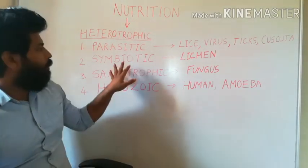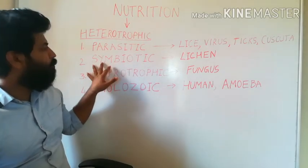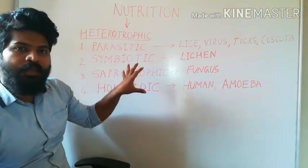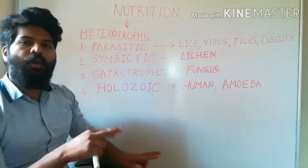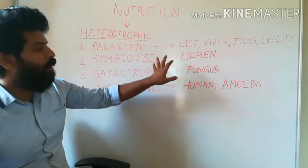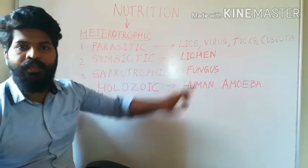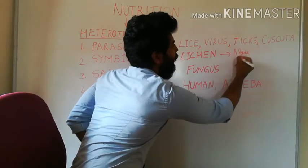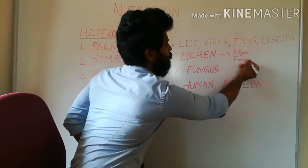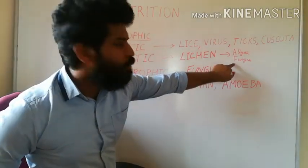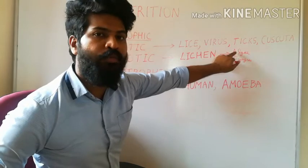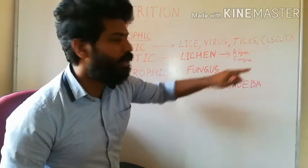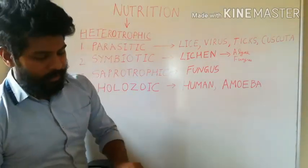The second type is symbiotic nutrition. 'Sym' means together and 'bios' means life. It is a type of relationship where two organisms are dependent on each other for their food. An example is lichen, which is an association of an algae and a fungus. The fungus provides water and protection for the algae, while the algae produces food which is used by the fungus — both are dependent on each other.